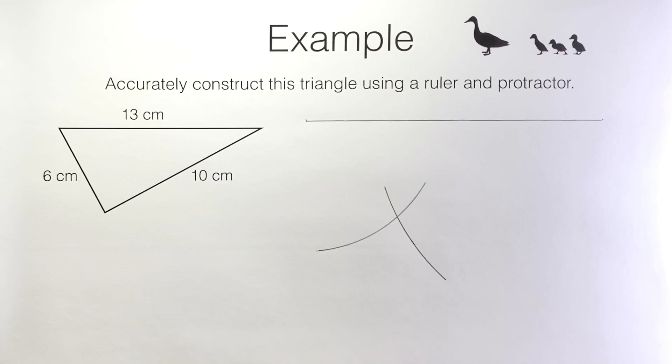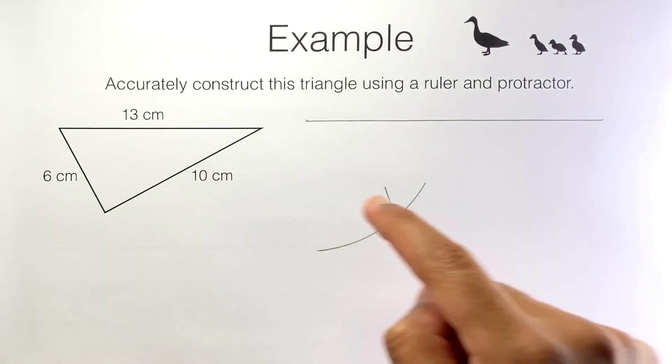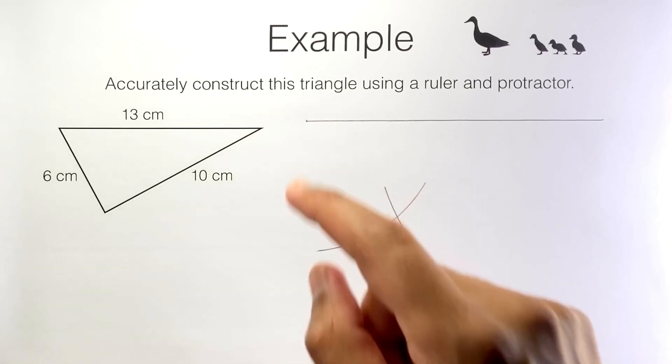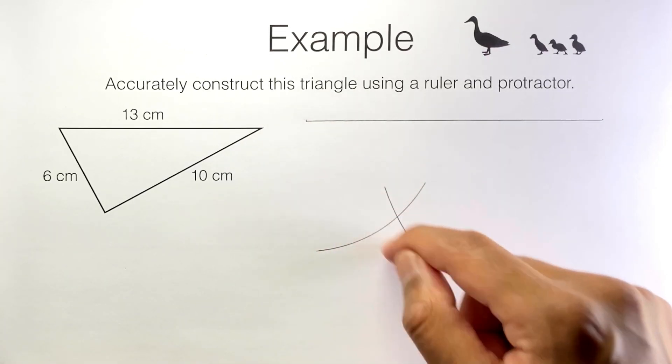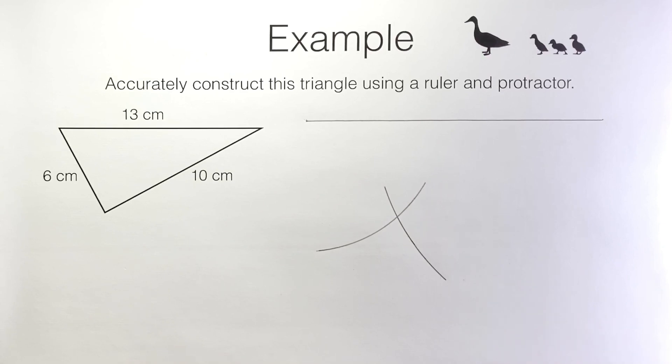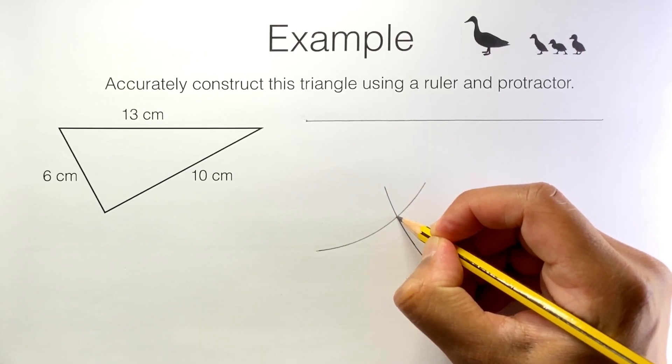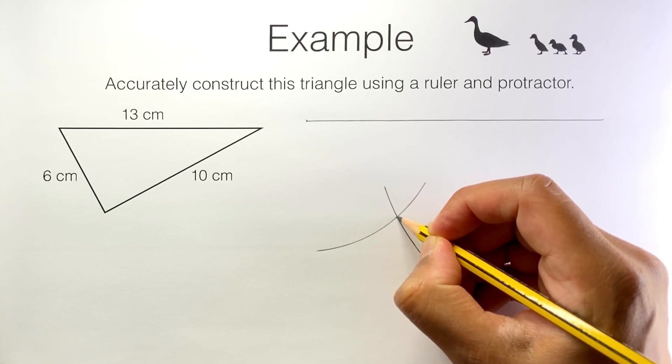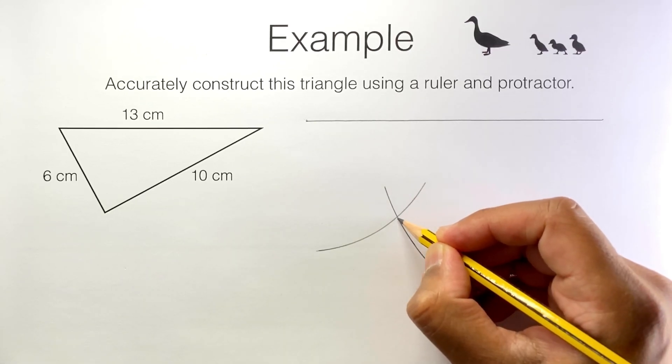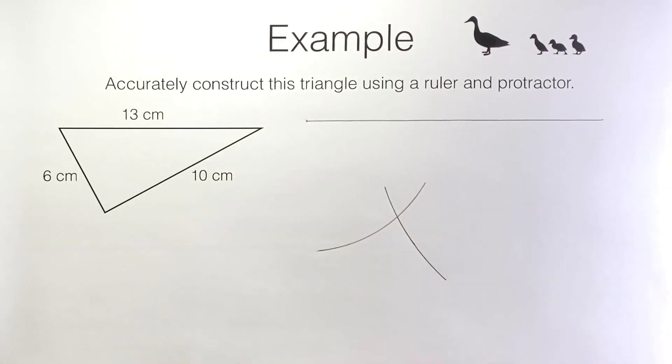Now, we know that our triangle's third vertex needs to be 10 centimeters from here and six centimeters from here. Therefore, it must be on both arcs. In other words, it is right here at this point of intersection. So I can just join this point to the other two vertices like this.